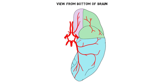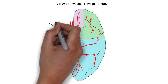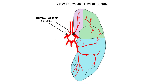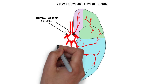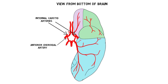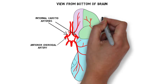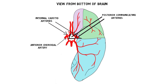Before splitting into the middle and anterior cerebral arteries, the internal carotids give rise to the anterior choroidal arteries, which supply a number of different structures, and the posterior communicating arteries, which connect the internal carotid arteries to the posterior cerebral arteries.